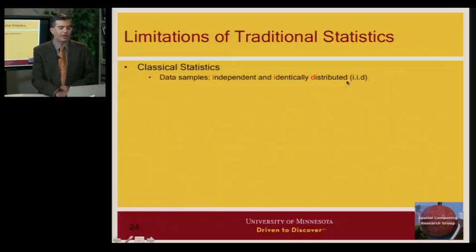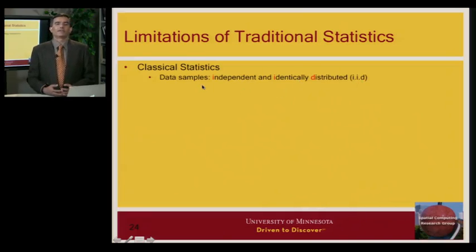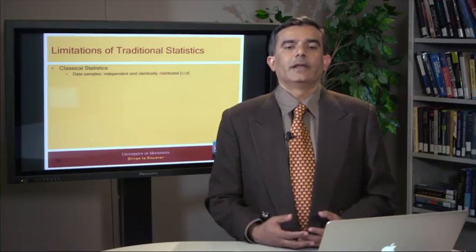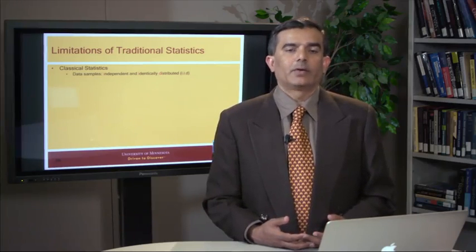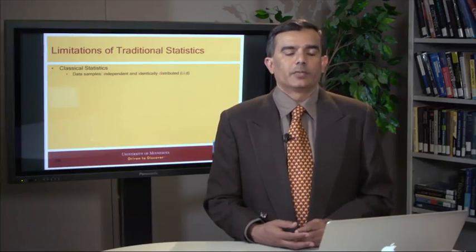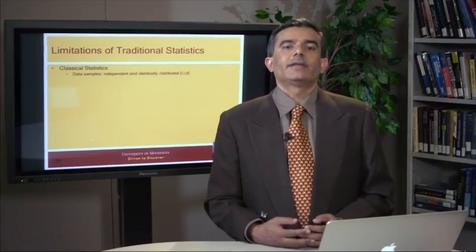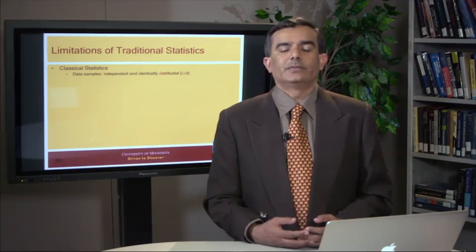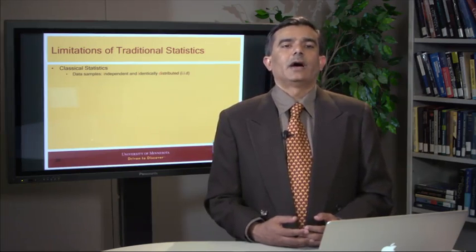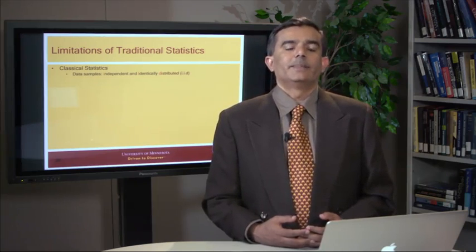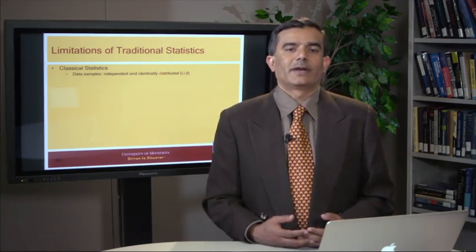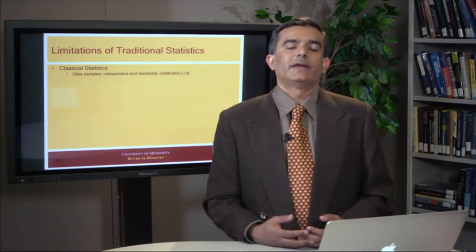This assumption is often called IID. The first I stands for independent, the second I stands for identical. Whenever we are given a set of data — for example, a list of disease locations like cholera deaths or crime reports — classical statistics will often assume that these data samples are independent of each other; they do not interact and they came from an identical population.